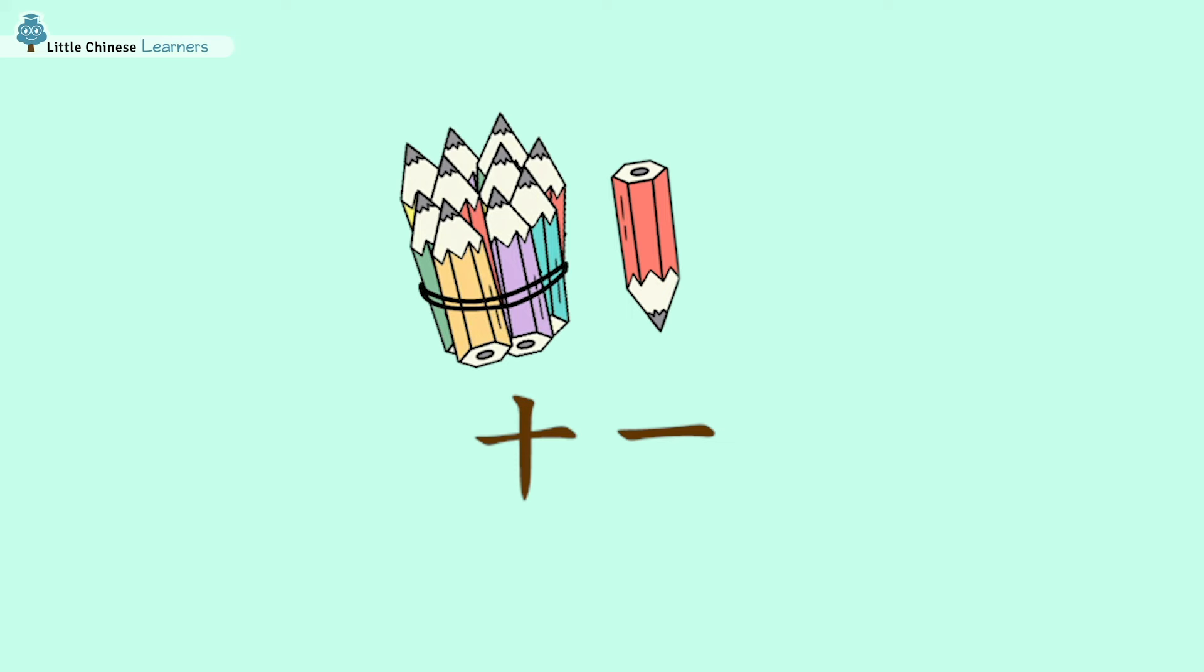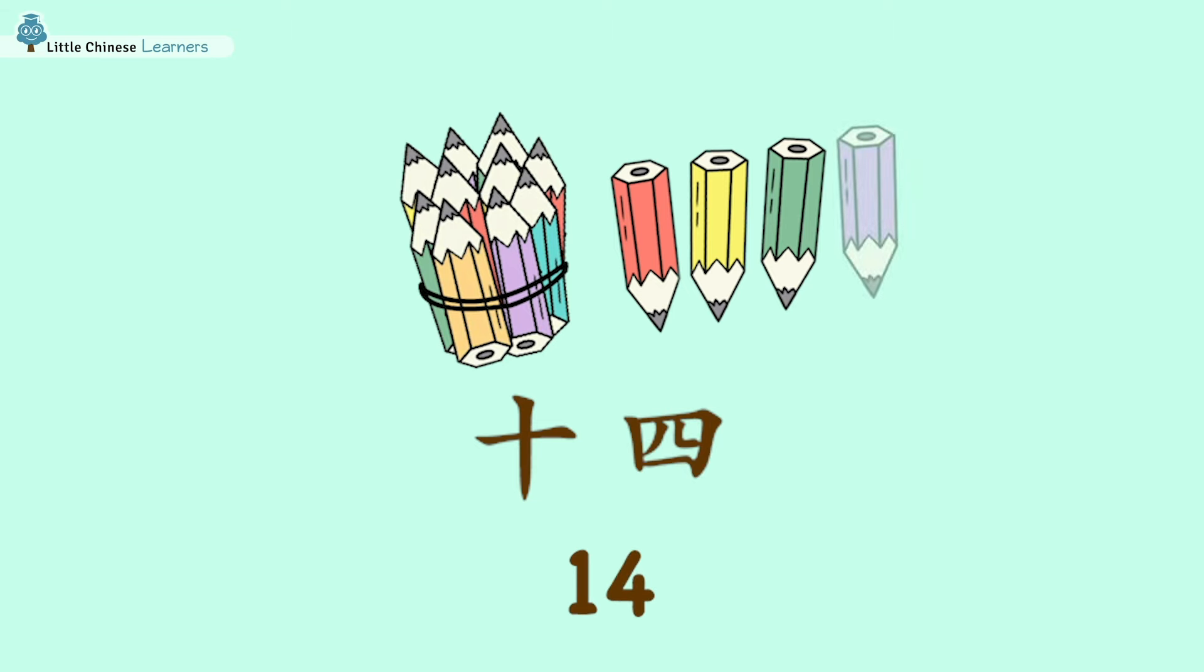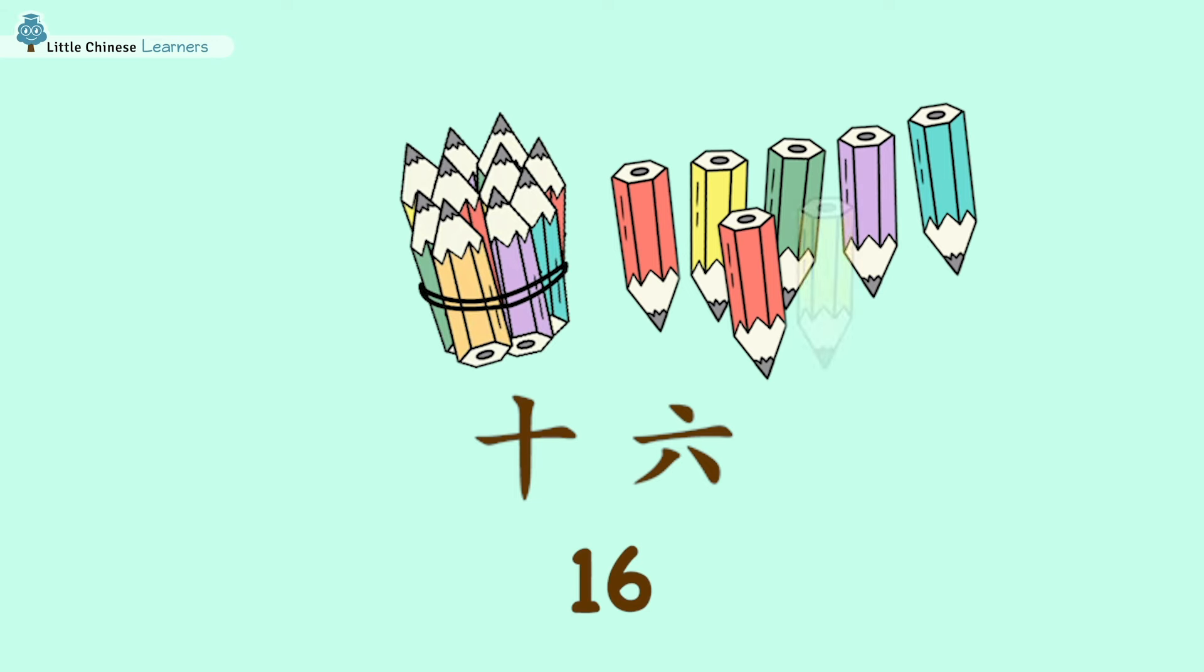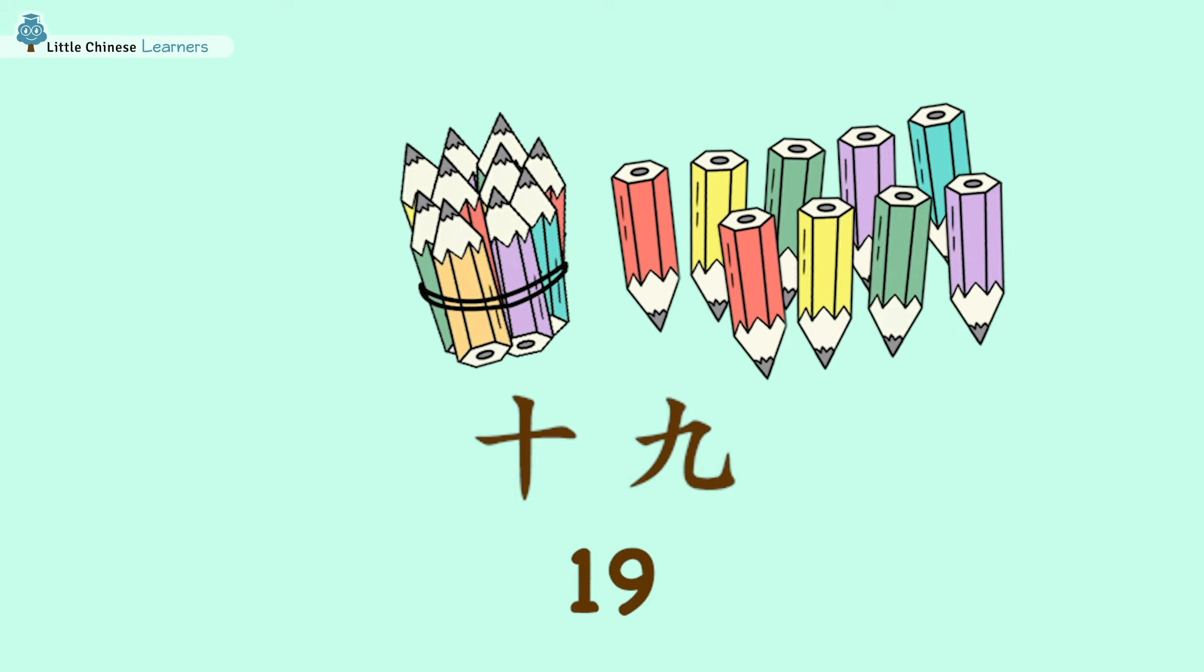十一. We do the same for 12, since it's 10 plus 2. 十二. We follow the same pattern for 十三, 十四, 十五, 十六, 十七, 十八, and 十九.